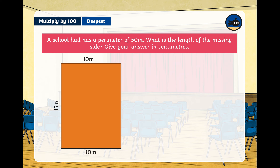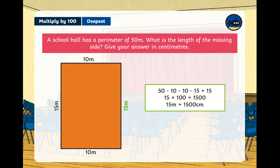The top side is 10 meters, so the bottom side is also 10 meters. The left side is 15 meters, so the right side is 15 meters too. The missing side is 15 meters. The calculation we want to do is 15 times 100, because there are 100 centimeters in every meter. So 15 times 100 equals 1500, meaning 15 meters equals 1500 centimeters.